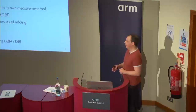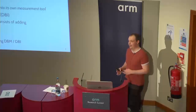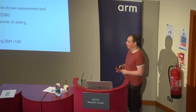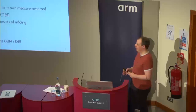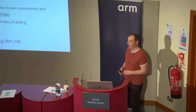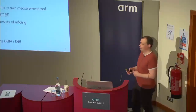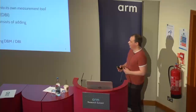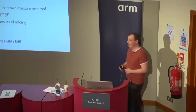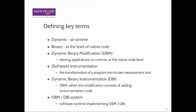Starting with 'dynamic' — in this case I just mean that it is something that happens at runtime, so while an application executes. Then 'binary' means that we are dealing with something that operates at a level of native code, without access to source code. When we put these terms together, we get the definition of Dynamic Binary Modification as a technique for altering applications at runtime, operating at a level of native code without requiring access to source code. For instrumentation, I quite like the definition as the transformation of a program into its own measurement tool. Dynamic Binary Instrumentation is essentially a specific type of Dynamic Binary Modification, where the modification consists of inserting instrumentation code into an application.